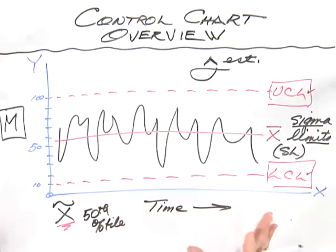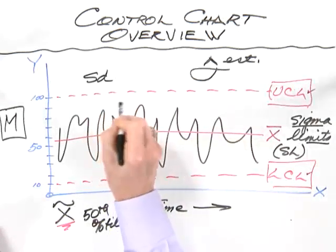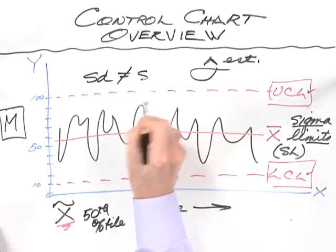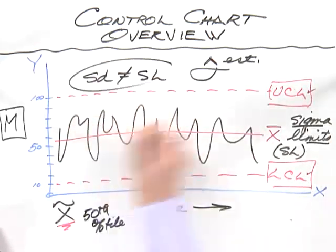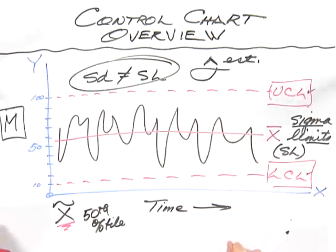So this is a fairly technical point, but it's not that difficult to grasp. The key thing is realizing that the standard deviation is not the same as a sigma limit. And if you want to know more about that, what you need to do is grab a book on statistical process control statistics, and it will go into greater detail. We don't have time to cover that today.